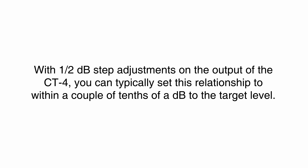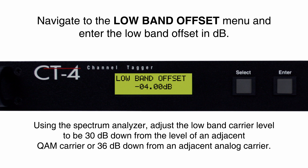With half dB step adjustments on the output of the CT4, you can typically set this relationship to within a couple tenths of a dB to the target level. At this stage, both sets of carriers at 612 MHz and 138 MHz are set at the same level. Due to tilt or other factors, the level of the carriers at 138 MHz may need to be adjusted. Follow the same procedure to determine the target level — 30 dB down from an adjacent QAM channel — then use the low band offset to adjust the level of the 138 MHz carriers independent of the carriers at 612 MHz.